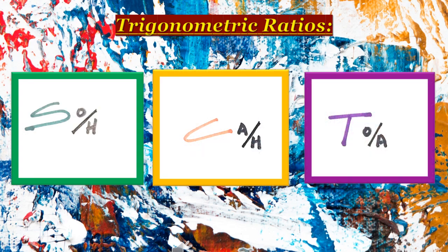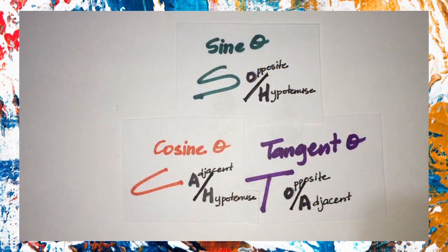SOH-CAH-TOA — trig ratios — these can help us solve triangles with right angles. SOH-CAH-TOA is the mnemonic that we use to remember the formula for the three primary trig ratios that we'll be using in class.